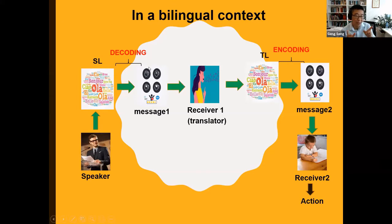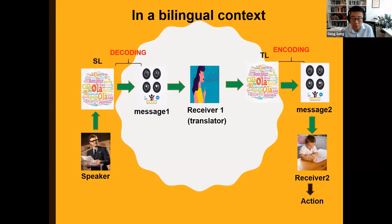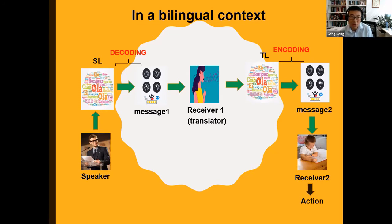The first component, from the source language to message one, is decoding. You have to understand the meaning the teacher is trying to convey — you have to understand English very well so that you could fully receive and accurately understand the message. In the second part, the encoding part, the translator has to convey the message through the target language, thinking about how the message can best be expressed in the target language. This part involves mastery of the target language.